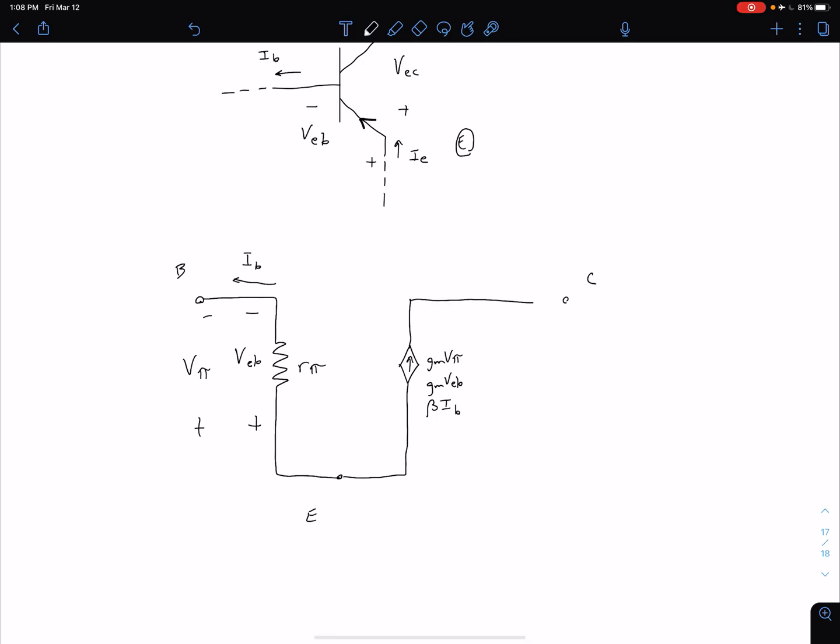And then if we want to include our small signal output resistance at the collector, or in other words, if we want to account for our early effect, we also include our output resistance, lowercase r0. And then our collector current IC is defined as coming out of our collector. And I've got my polarities backwards there.